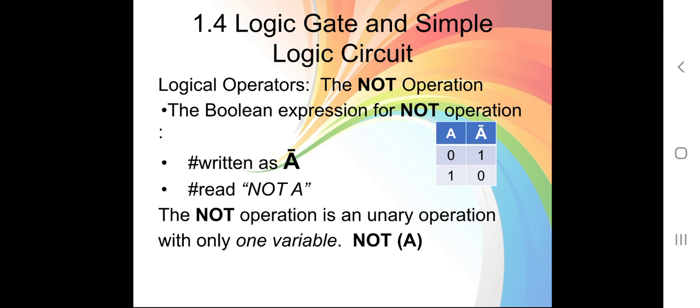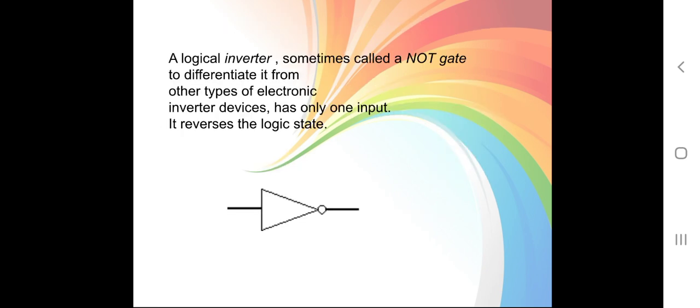The third operator is the NOT gate. The Boolean expression for NOT operation can also be written as A-bar. If 0 is your input, your output will be 1. If your input is 1, your output will be 0 — it inverts your input. This is a unary operation because it has only one input. When we have one input, we call it unary; when we have two inputs, we call it binary. A logical inverter, sometimes called a NOT gate, has only one input and reverses the logic state — insert 1 and it becomes 0, insert 0 and it becomes 1.